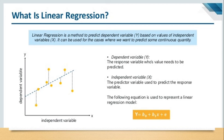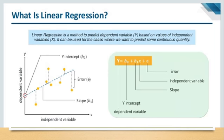This shows the linear regression between the independent variable x and the dependent variable y. The equation used to represent the linear regression model is y = b0 + b1x + e, where y is the dependent variable, b1 is the slope or coefficient of the independent variable x, and e is the error — the difference between the actual value and the predicted value.